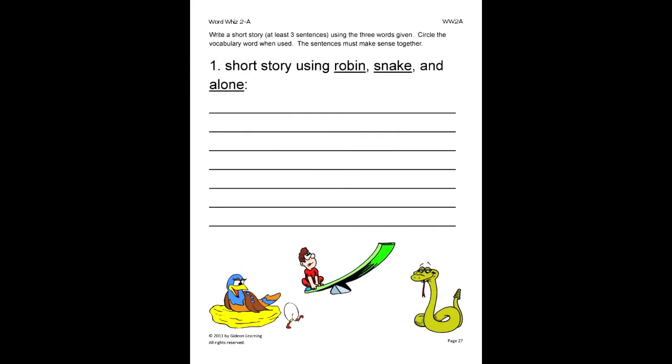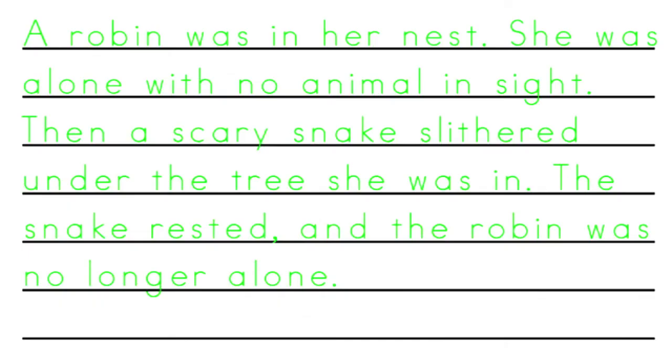Lastly, the student will write a short story of at least three sentences. Be sure that the sentences make sense together. A good story would be like this one: A robin was in her nest. She was alone with no animal in sight. Then a scary snake slithered under the tree she was in. The snake rested and the robin was no longer alone.